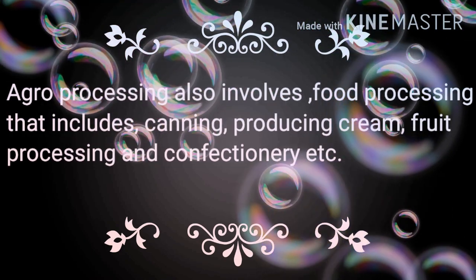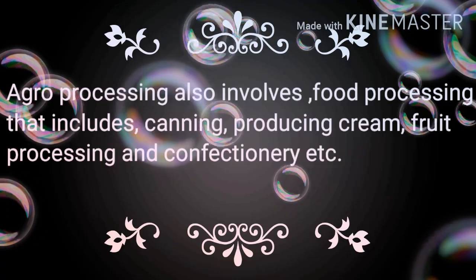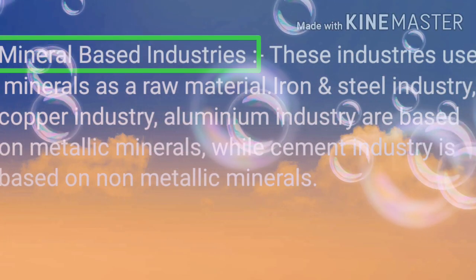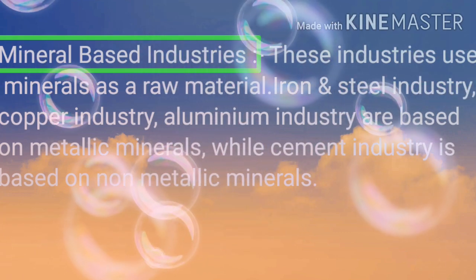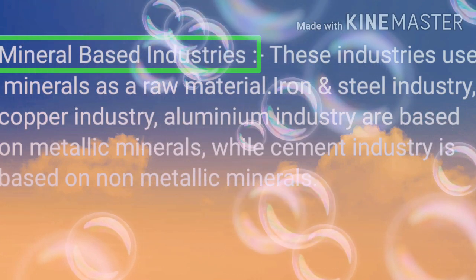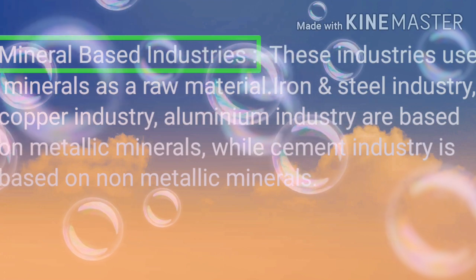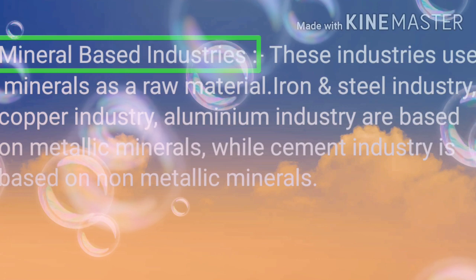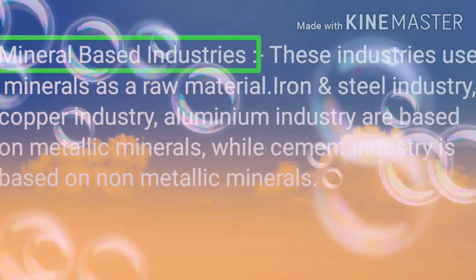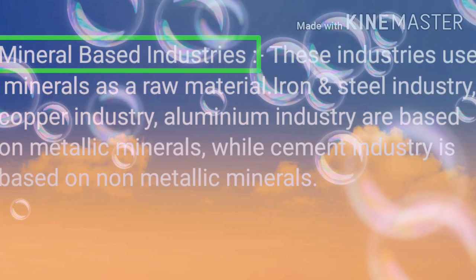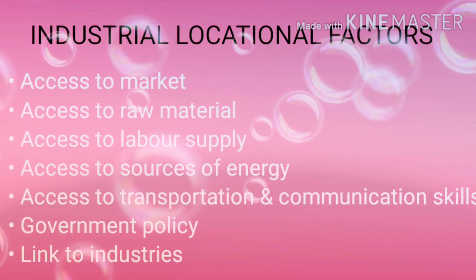Agro-processing also involves food processing, including canning, producing cream, fruit processing, and confectionery. Mineral-based industries use minerals as raw materials. They are classified into metallic mineral-based industries and non-metallic mineral-based industries. Metallic mineral-based industries are further divided into ferrous and non-ferrous types. Iron and steel, aluminum, and copper industries are examples of metallic mineral-based industries, while cement is an example of non-metallic mineral-based industry.